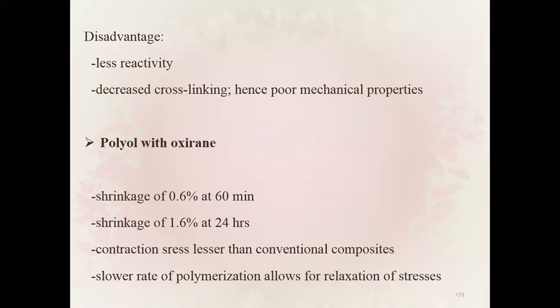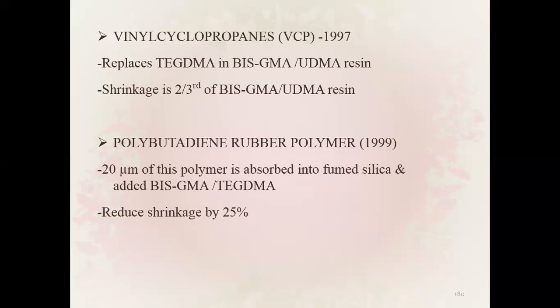Polyol with oxirane: shrinkage of 0.6 percent at 60 minutes and 1.6 percent at 24 hours; contraction stress lesser than conventional composite. Bicyclic cyclopropanes replace TEGDMA and Bis-GMA/UDMA resin; shrinkage is two-thirds of Bis-GMA or UDMA resin. Polybutadiene rubber polymer — 20 micrometers absorbed into fumed silica and added to Bis-GMA or TEGDMA — reduces shrinkage by 25 percent.